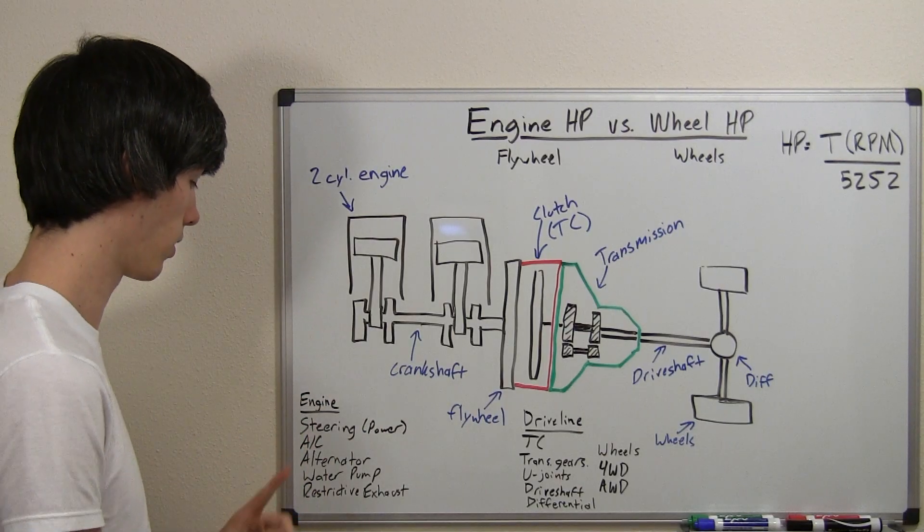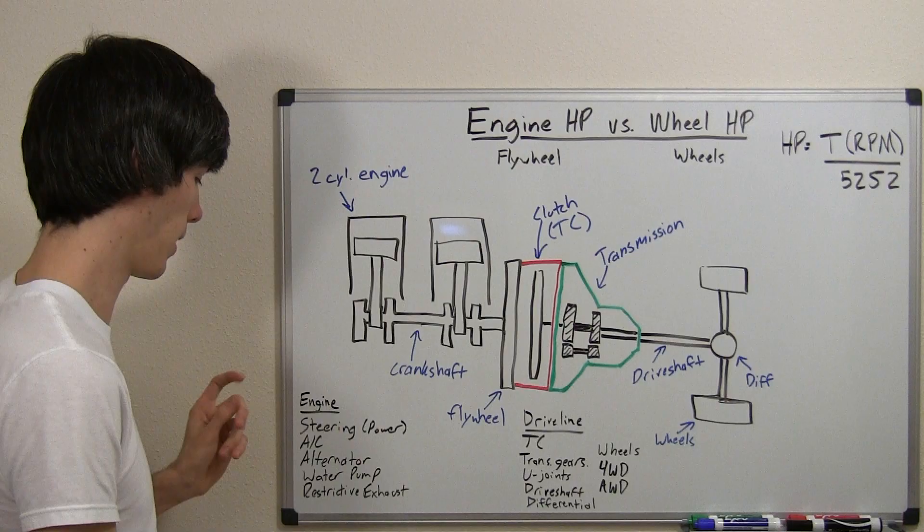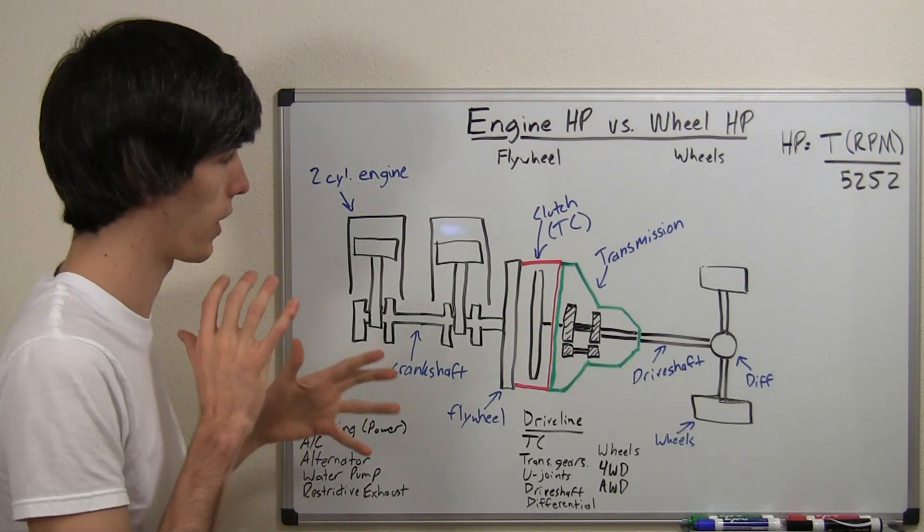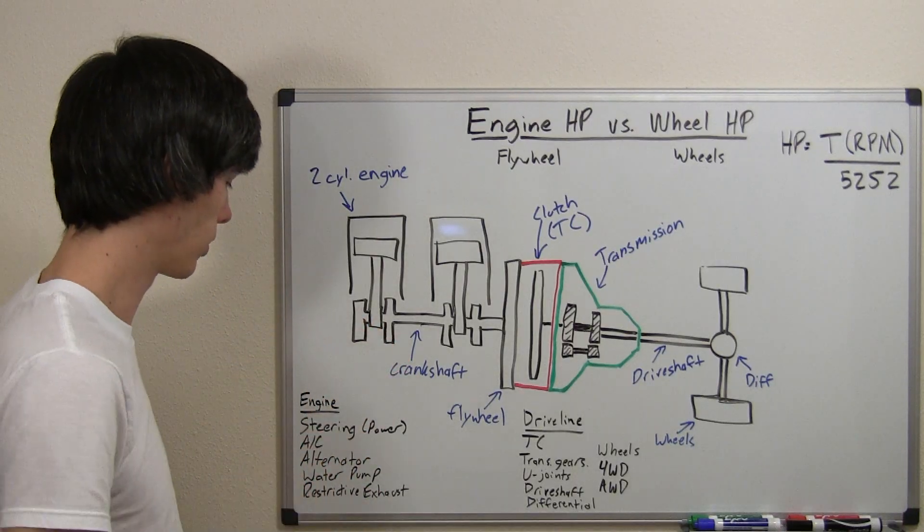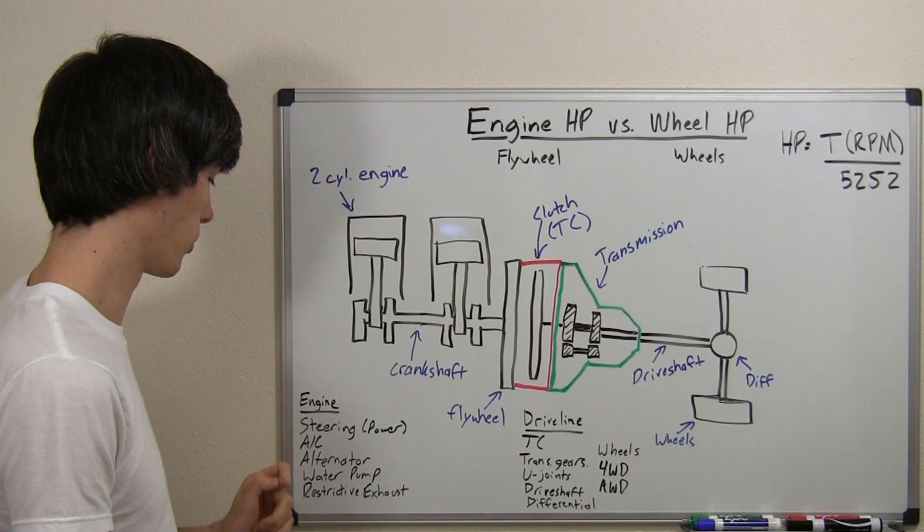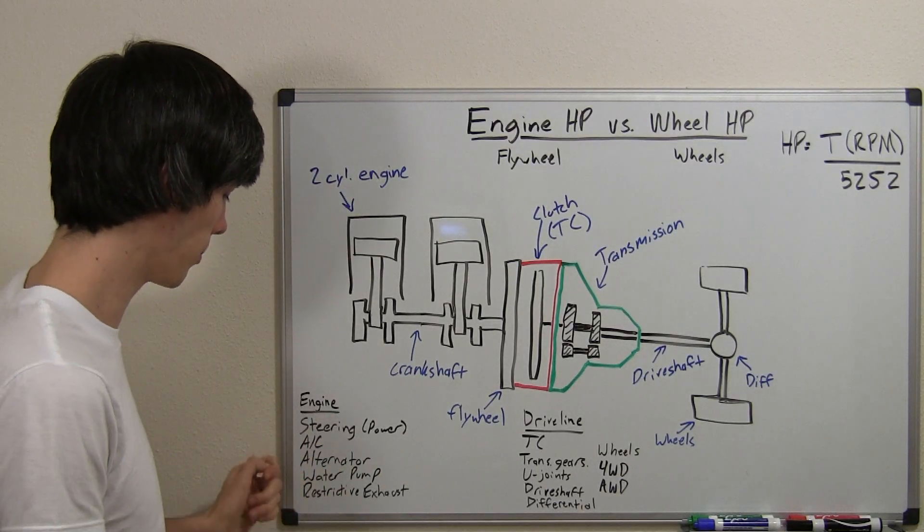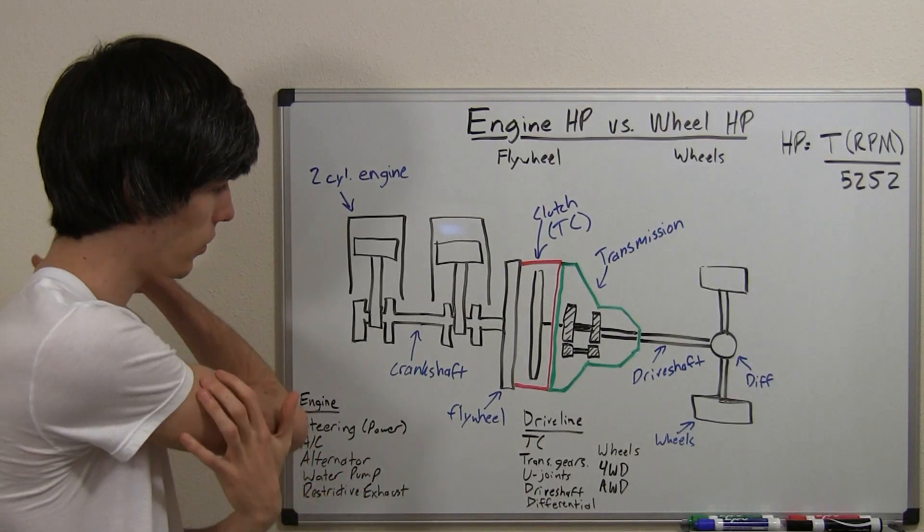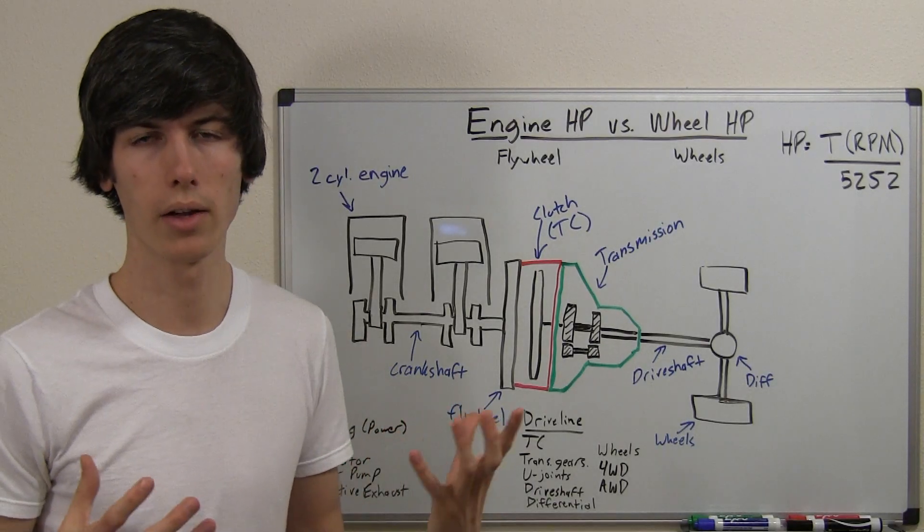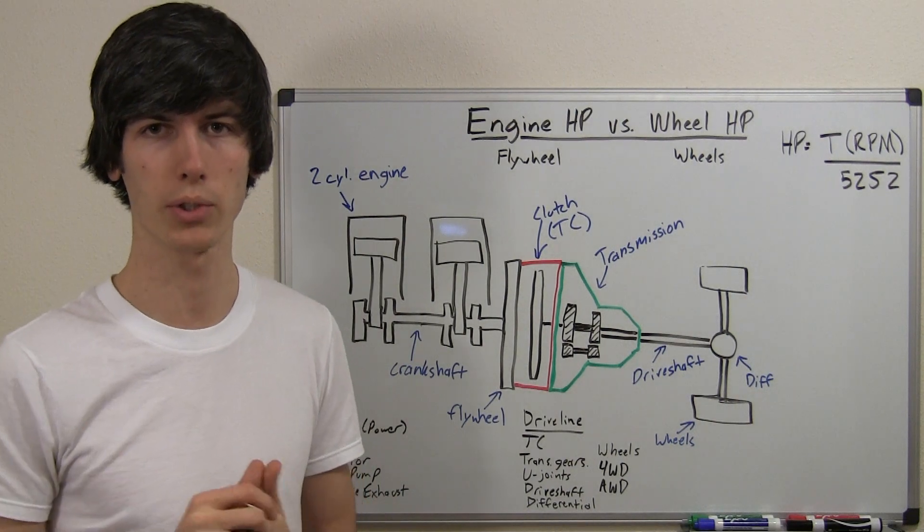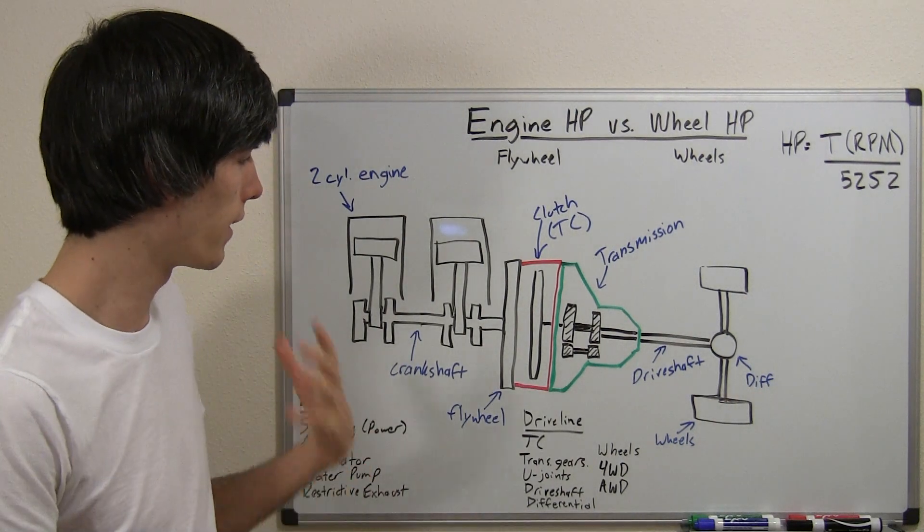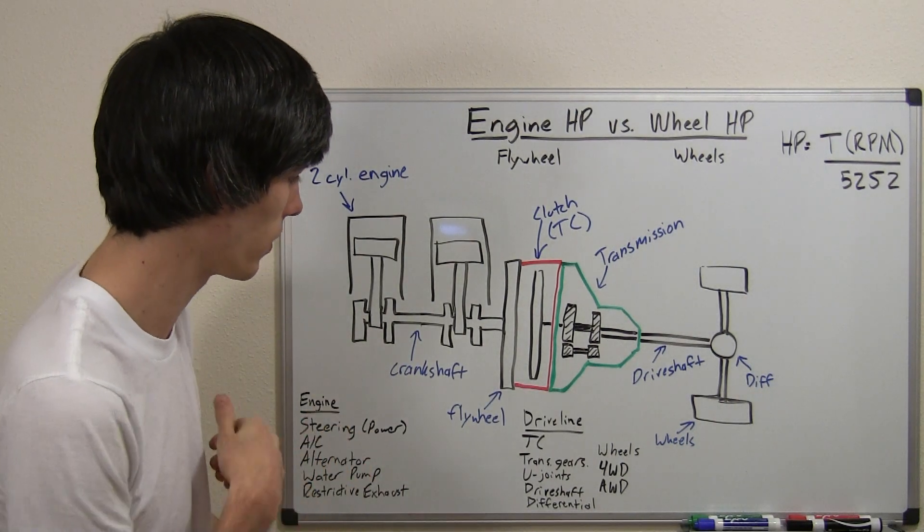Other things that may drain power from your engine that might not be included in what the manufacturer is claiming as the horsepower include the alternator, which powers all the electrical and recharges the battery, the water pump, and if you have a restrictive exhaust. They may measure engine power without a very restrictive exhaust, and then put a restrictive exhaust on the car, and then the engine horsepower is going to be a bit different.